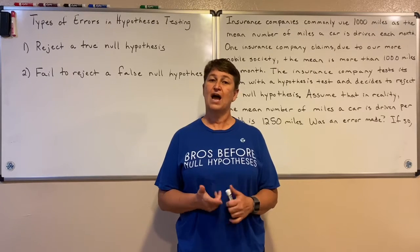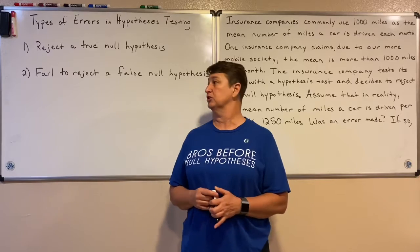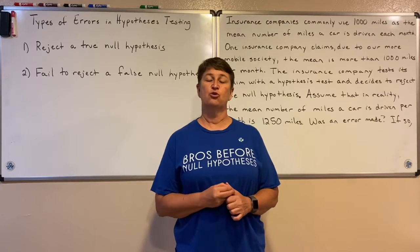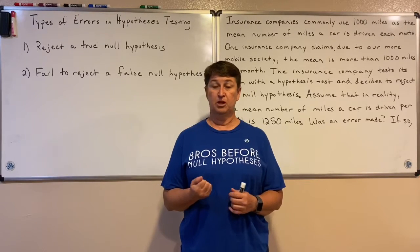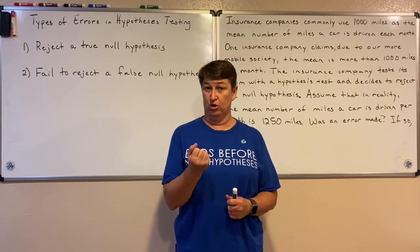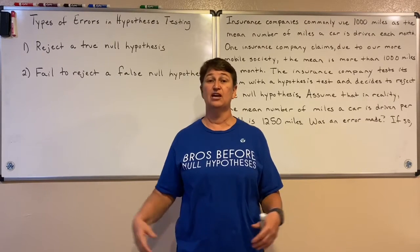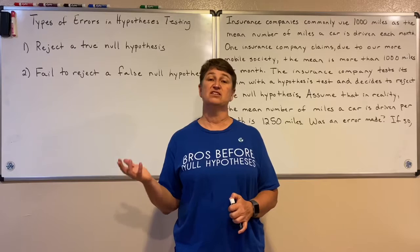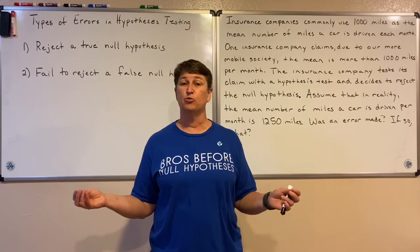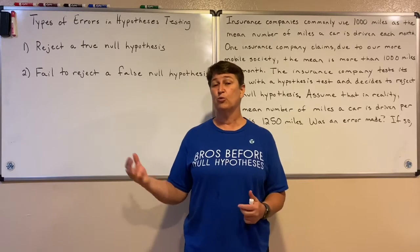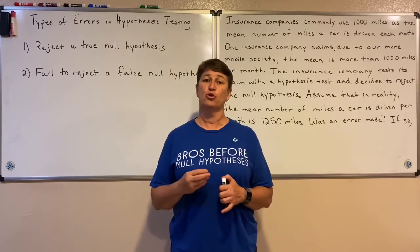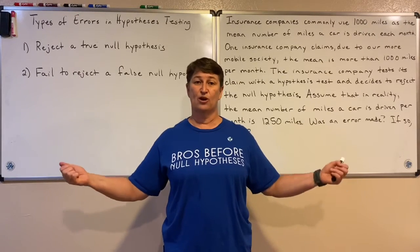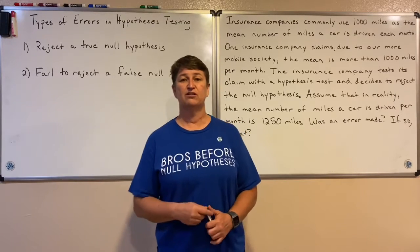The first type, or Type 1 error, that we can make in our conclusion is to reject a true null hypothesis. In this case, we go out and gather our test statistic and we get a rare outcome where that particular test statistic is way out and it's some weird reading that turns out to be statistically significant. The probability we get it is really, really low. So we reject our true null hypothesis, but it turns out that null hypothesis is correct — we just got a weird reading for some reason. That's a Type 1 error.